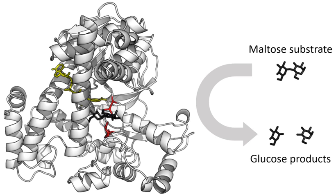In 1877, German physiologist Wilhelm Kühne first used the term enzyme, which comes from the Greek enzymon, to describe this process. The word enzyme was used later to refer to non-living substances such as pepsin, and the word ferment was used to refer to chemical activity produced by living organisms.